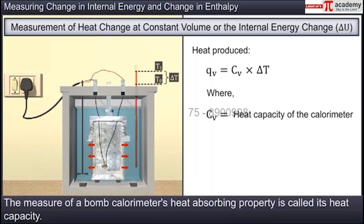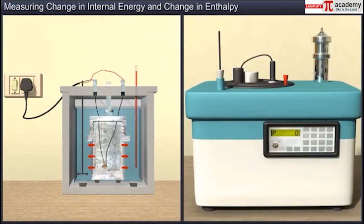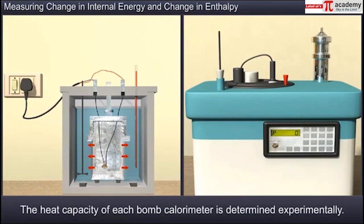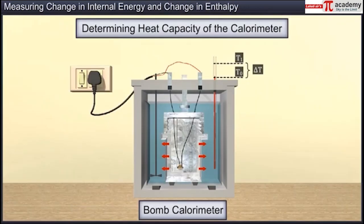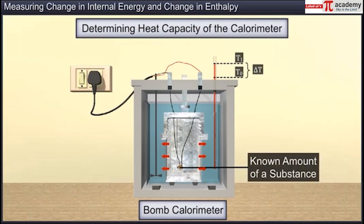The measure of a bomb calorimeter's heat-absorbing property is called its heat capacity. Each bomb calorimeter differs in its ability to absorb or release heat, and the heat capacity of each bomb calorimeter is determined experimentally by igniting a known amount of a substance whose heat of combustion is already known in the same calorimeter.